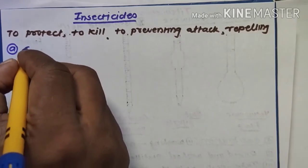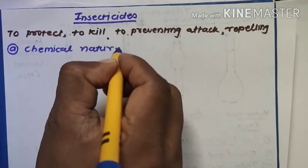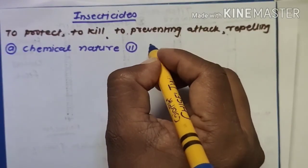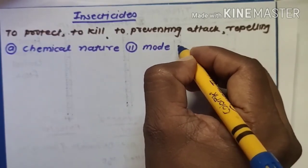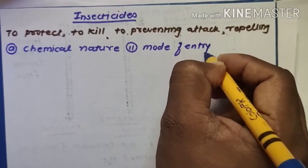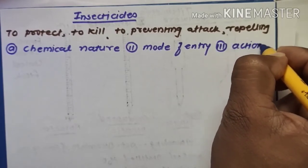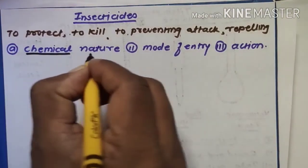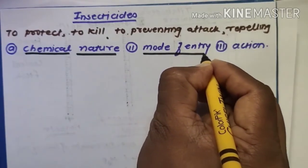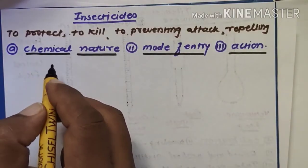Insecticides are classified on the basis of their use. The first classification is according to chemical nature. The second classification is based on mode of entry. The third classification is based on mode of action. These are the three important classification criteria for insecticides.